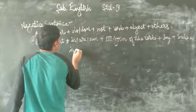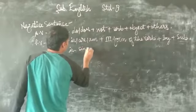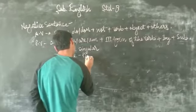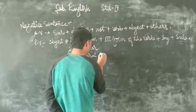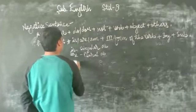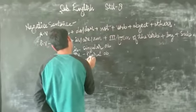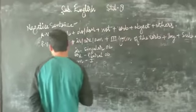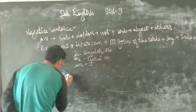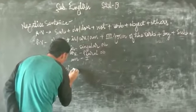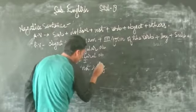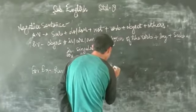Is is used with singular. Are is used with plural object. Am is used with I.